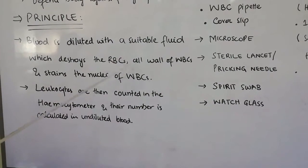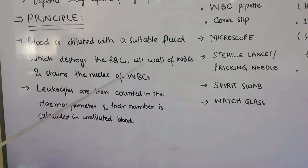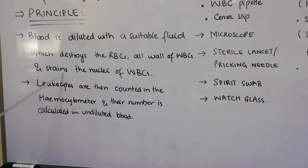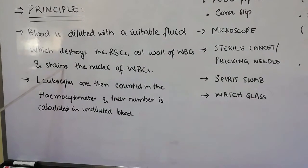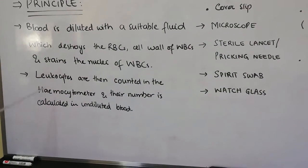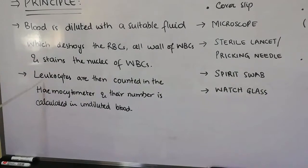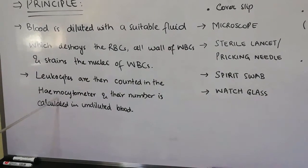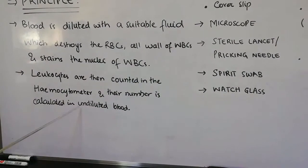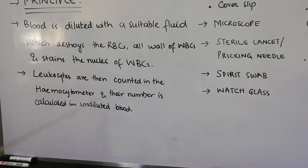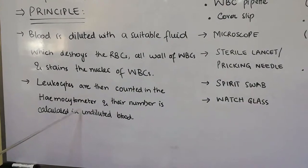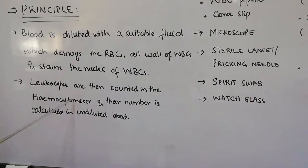When the cell walls of WBCs are destroyed, the nuclei of WBCs get stained, which makes the identification of WBCs easier. After that, the leukocytes are counted in the hemocytometer and their number is calculated in undiluted blood. That is the principle of this practical — the determination of WBC count by Neubauer chamber.